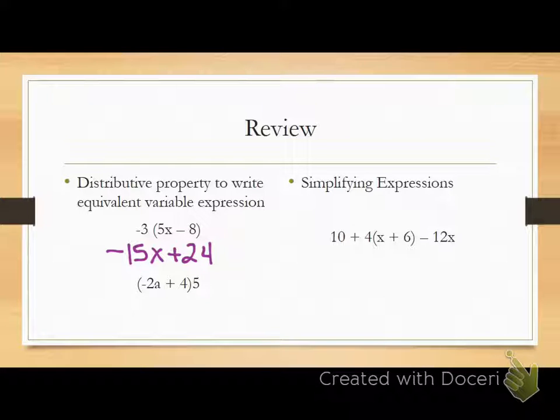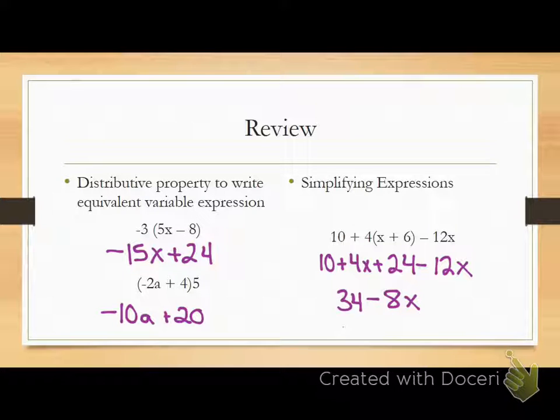What about the next one? Cole, what'd you get? Negative 10A plus 20. Very good. Negative 10A plus 20. What do you do first on the simplifying one? What would you want to do first on that one? Jonathan? Multiply 4 by X and 6. Very good. 4X plus 24. And now we can combine what? Combine our like terms. So 10 plus 24 is 34. And what's 4X minus 12X? Negative 8X. Negative 8X. Now, would it be okay if I wrote it negative 8X plus 34? Is that the same thing? Yeah, it is because I didn't change my signs. And what property says that I can change the order without changing the answer? Commutative. Commutative property says I can change the order without changing the answer as long as I keep my signs the same. If you understand all that, you should be ready for your test tomorrow.